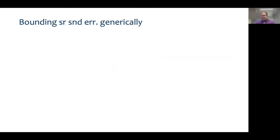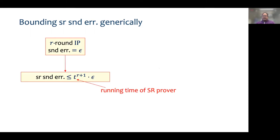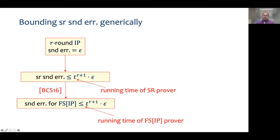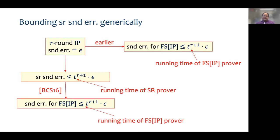We define the state restoration soundness error as the probability that the cheating prover wins. The question we can ask is: can we bound the state restoration soundness error for a protocol generically if we know the regular soundness error? Well, if we have an R-round protocol with soundness error epsilon, we can show generically that for a cheating prover running in time t, the state restoration soundness error is upper bounded by t^(r+1) times epsilon. This can be translated into an upper bound on the soundness of the non-interactive protocol resulting from the Fiat-Shamir transform. But if you remember, we could have already proved the same bound generically — and in fact, technically the proofs behind these two statements are the same. And it looks like we're back to square one.